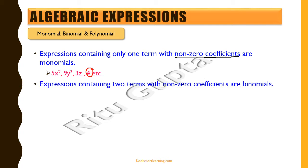Expressions containing two terms with non-zero coefficients are binomials. Examples are 5x² plus 9y³, 3x² minus 7z, and 2x plus 6. All of them have two terms with non-zero coefficients. For instance, 9x² plus 0y³ would not be a binomial because 0y³ is essentially 0 — it is not a term — so the only term would be 9x², making it a monomial.